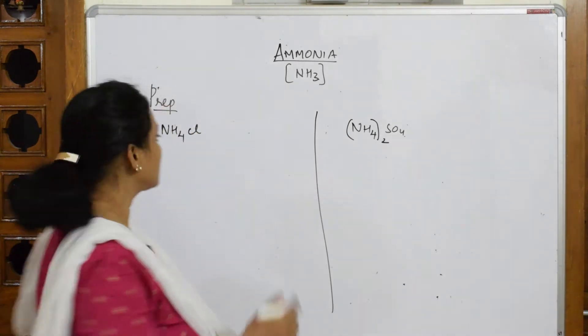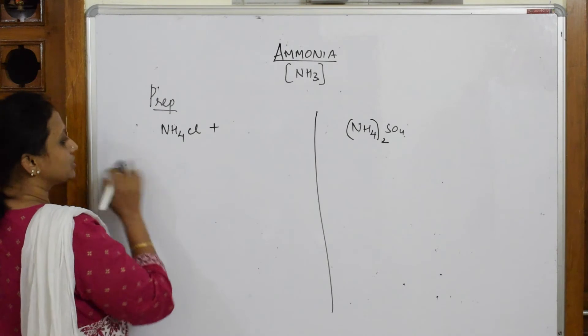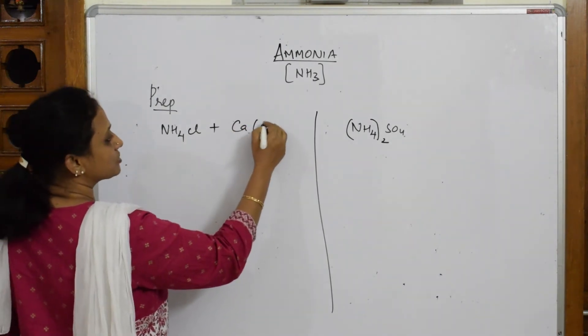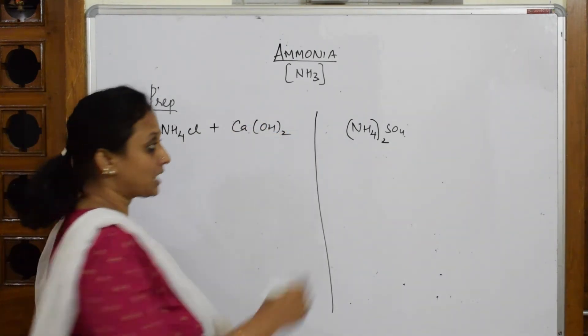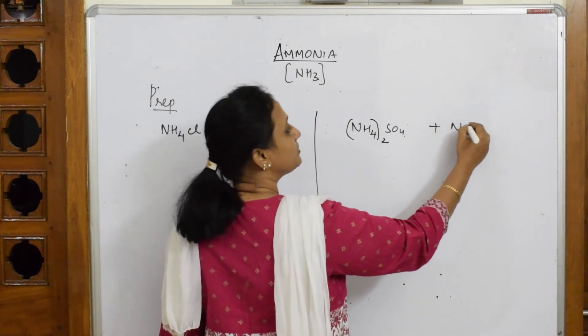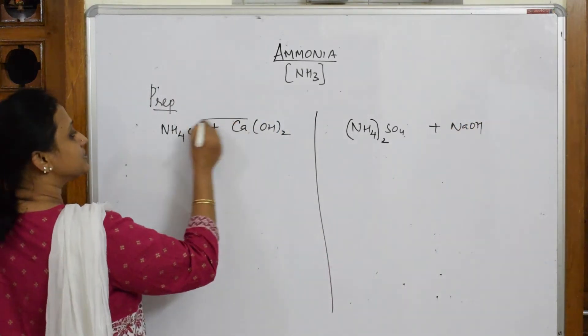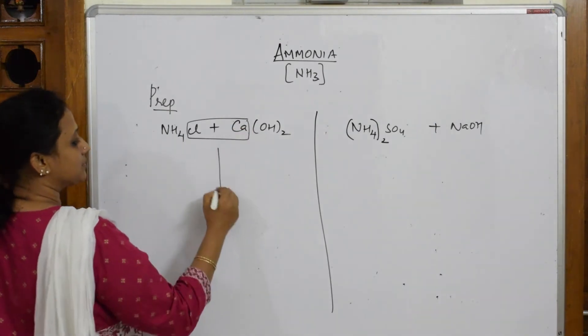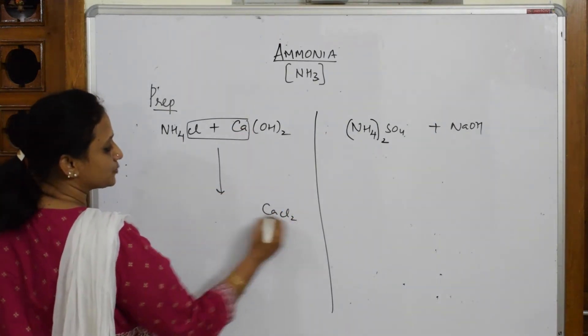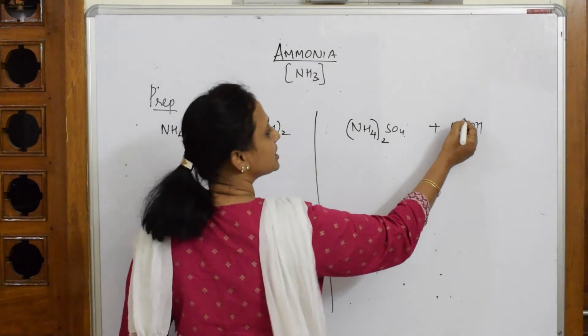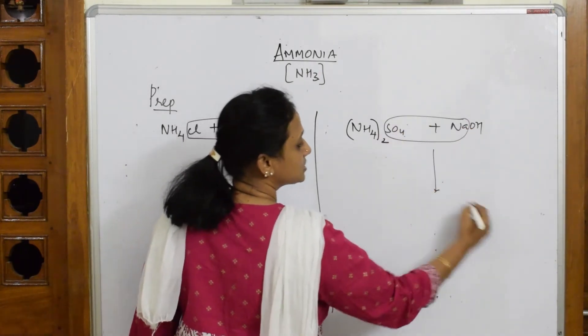Now suppose to this if I'm adding calcium hydroxide, I'm taking a base. To this, suppose I'm adding sodium hydroxide, a base. Now just observe carefully: calcium chloride comes out CaCl2. Here in this case, sodium sulfate comes out, so Na2SO4.